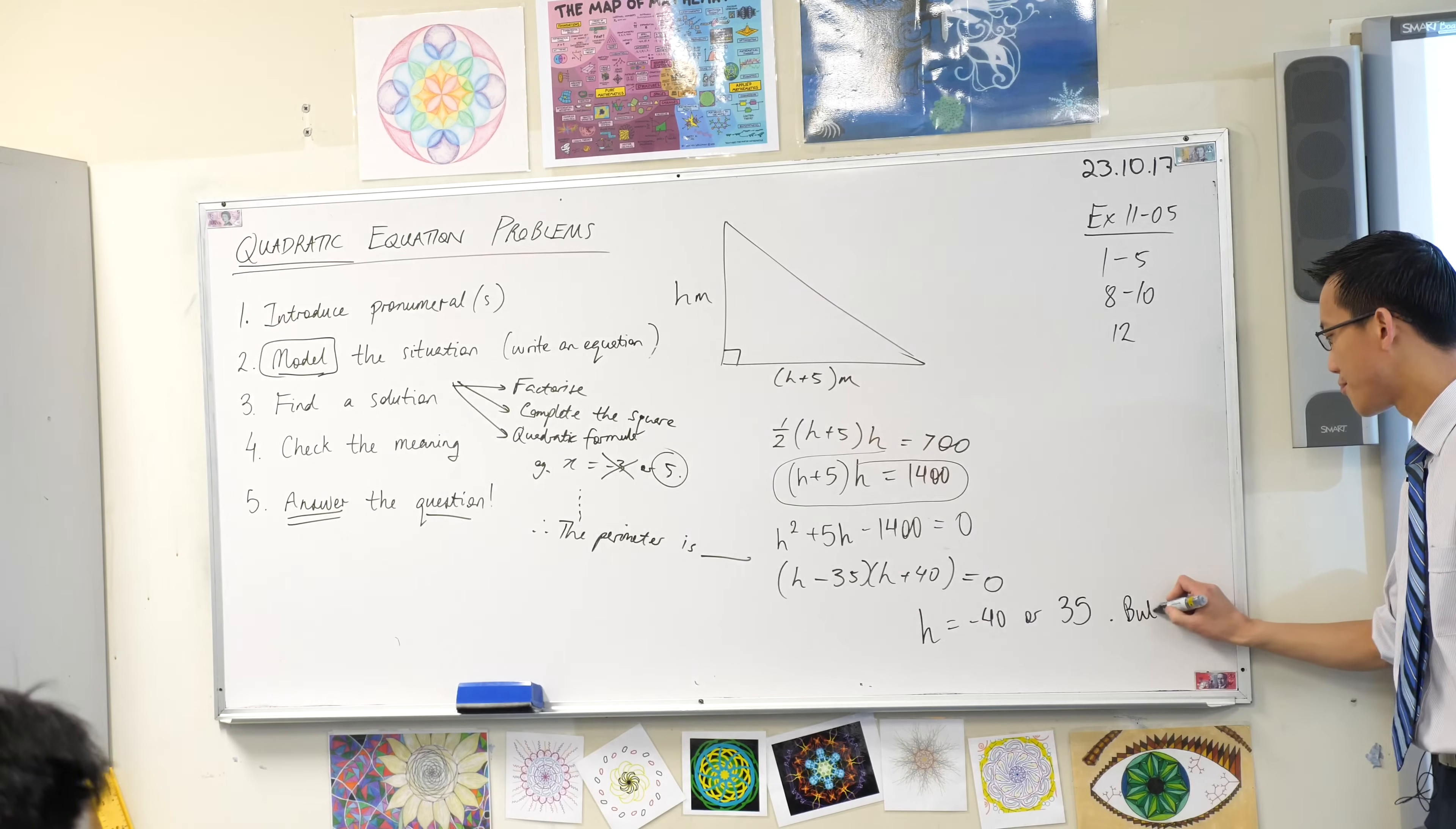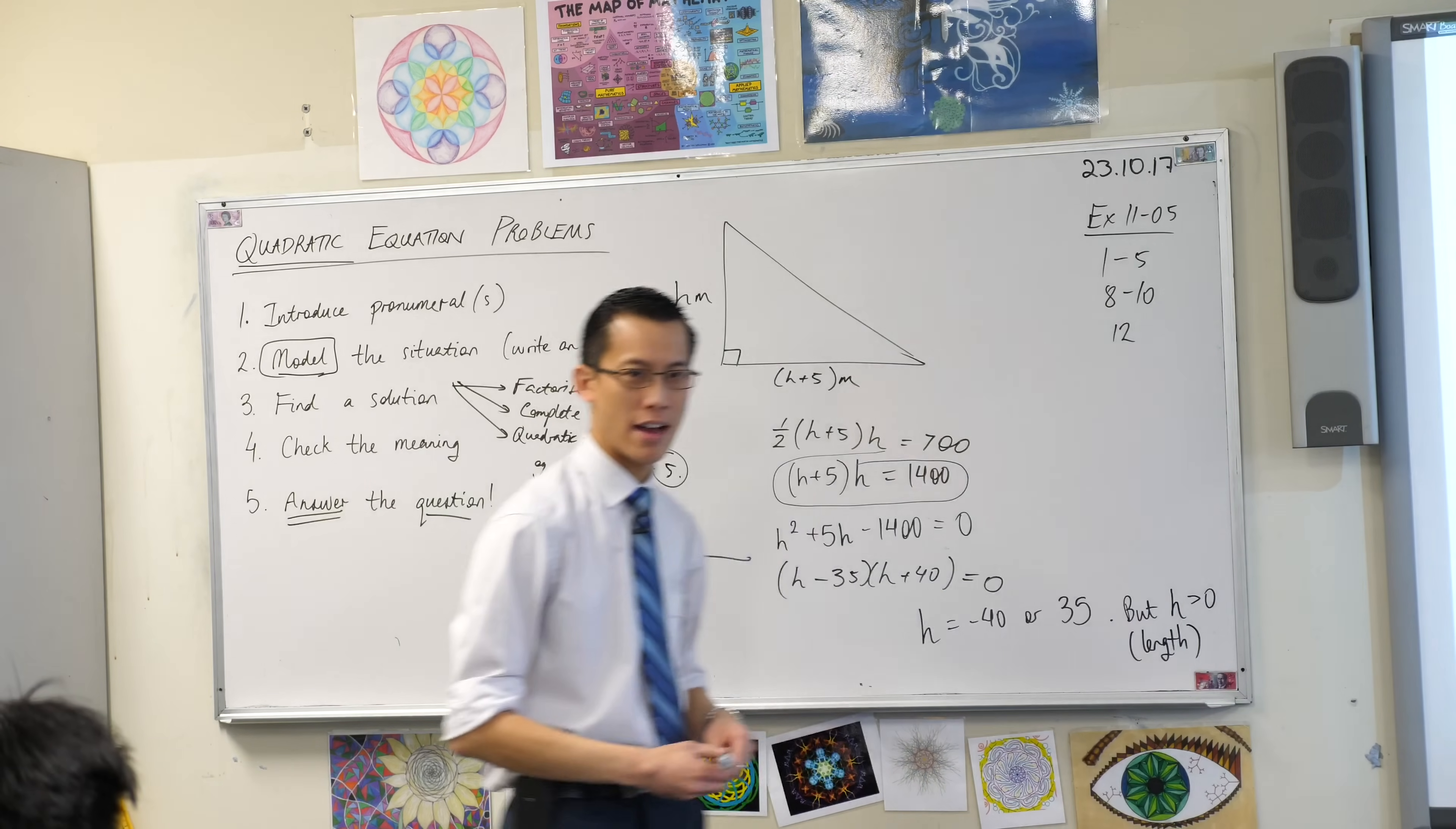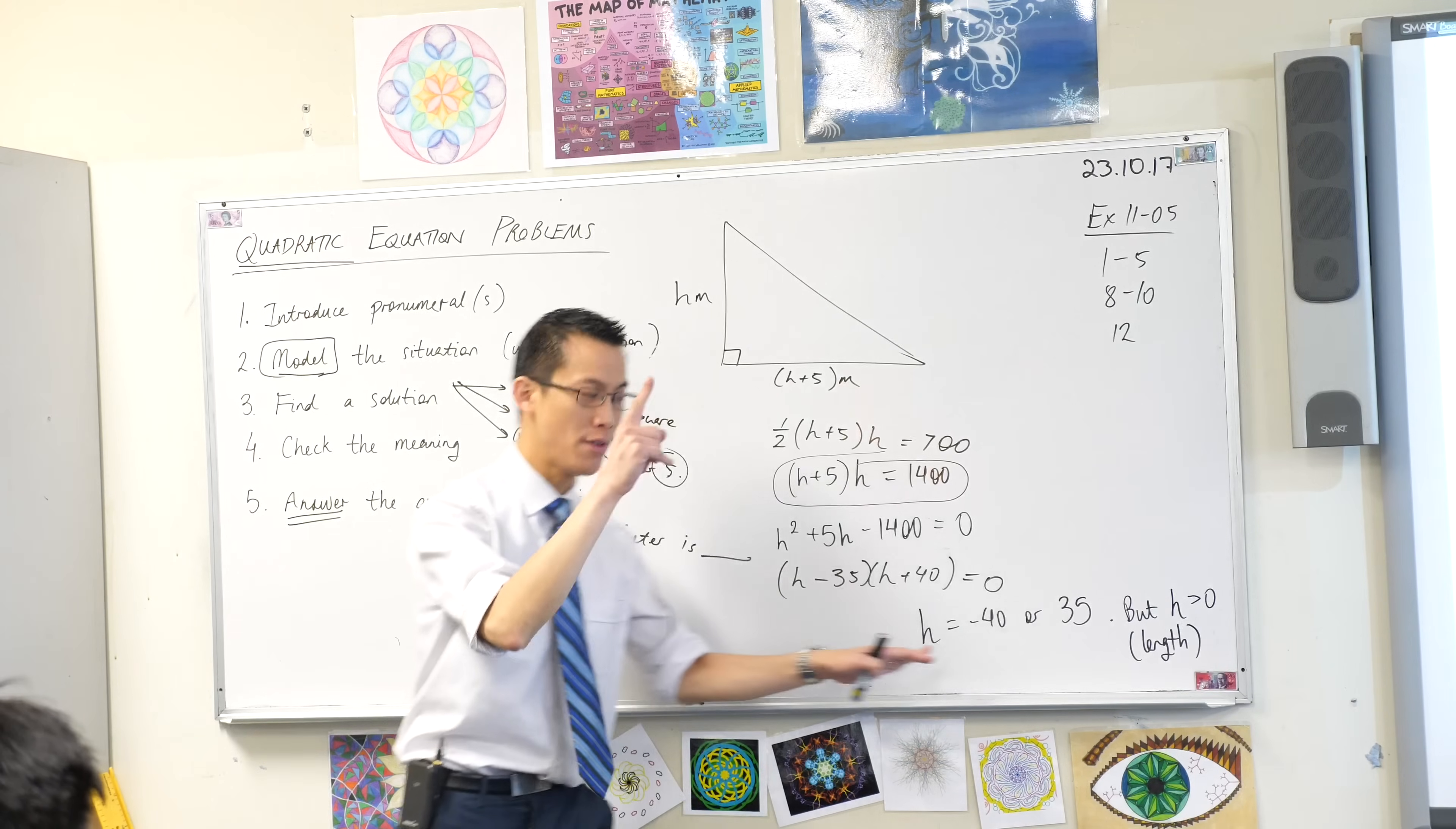You say, but have a look at what h represents. It's a length. So therefore, it has to be positive. In fact, I would encourage you to even write that. h is greater than zero. It's a length. Sometimes h can be negative, right? If h is, say, a temperature. Temperatures can be negative. If h was, say, a time. Time can be negative. If time zero is like midday, then time negative one is like 11am or something like that.